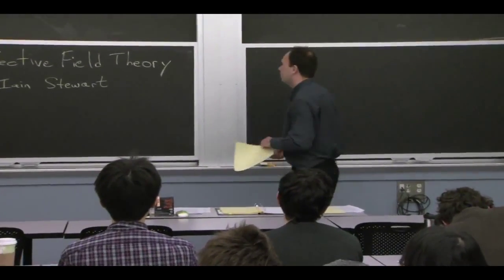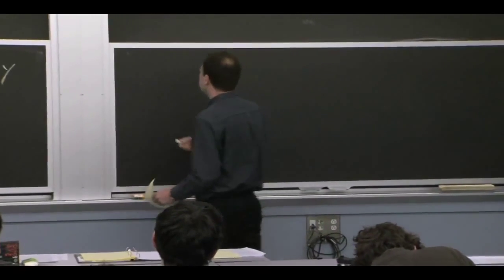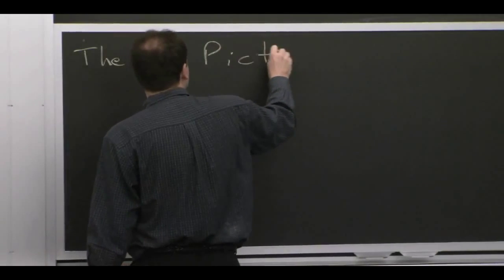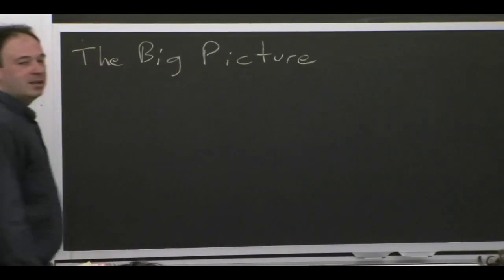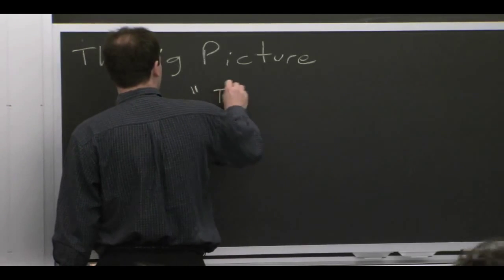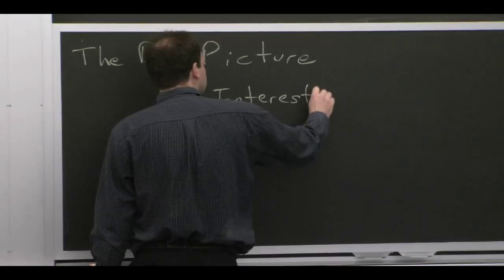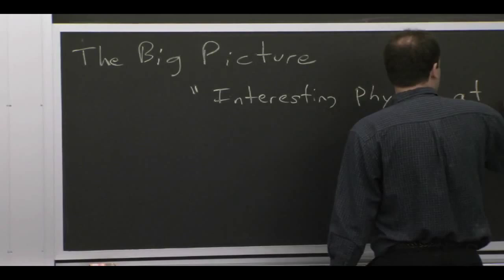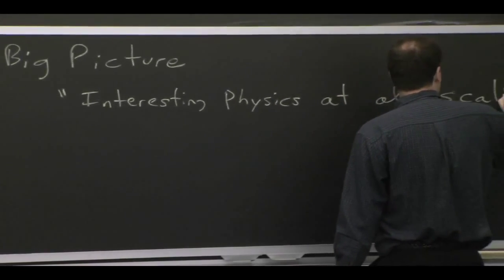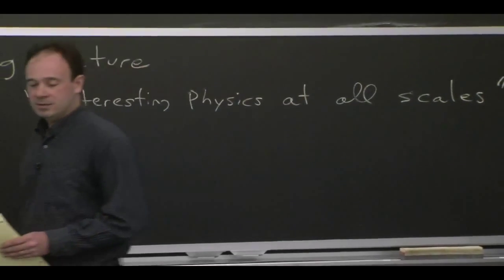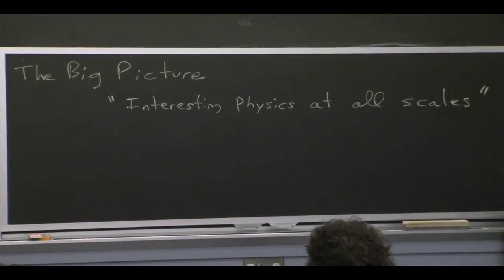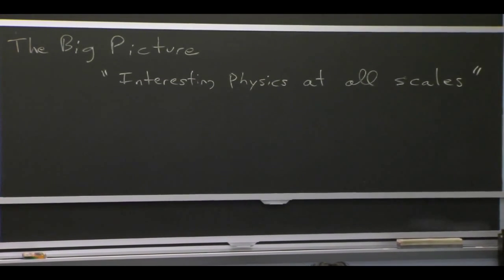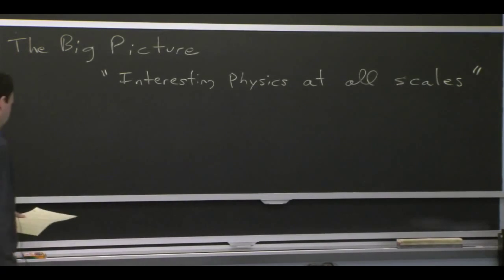All right. So let's start with the big picture. I like to say that the big picture is that there's interesting physics at all scales. What effective field theory lets you do is it lets you tease out this interesting physics at all scales. So in particular, you can focus on a particular scale and find the interesting physics there using the tools of effective field theory.